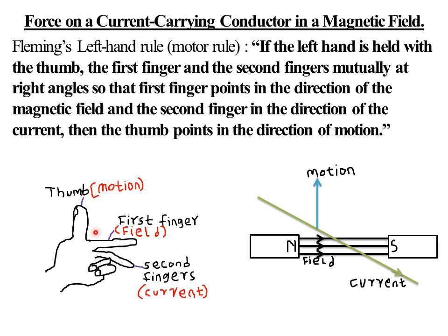You take your hand, align the first finger towards the direction of the field (from north to south pole), align the second finger along the direction of the current, then observe the direction of the thumb. For the case shown, the thumb is pointing upwards, so this particular conductor is expected to move upwards — the direction of deflection of the conductor is upwards.